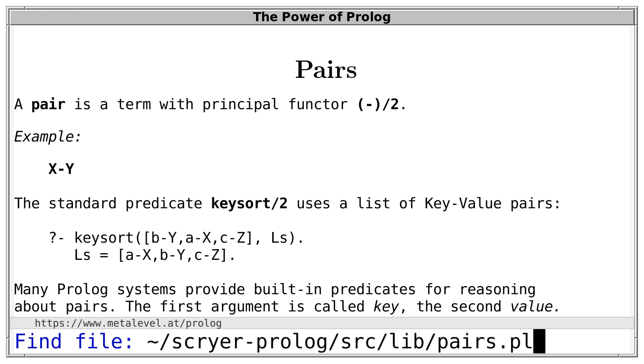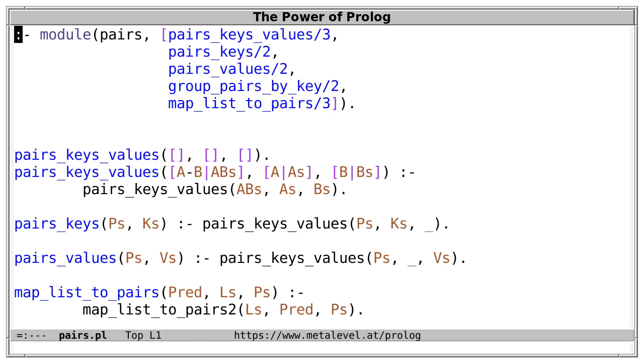For example, let's take a look at library pairs of Scryer Prolog, which has useful predicates for reasoning about pairs, such as pairs_keys_values, which lets us relate a list of pairs to their respective keys and values.